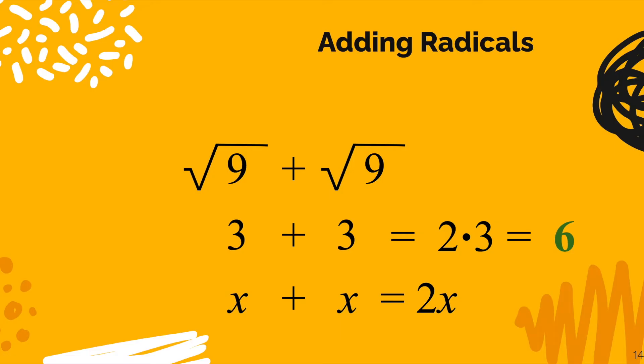Much like when we added 3 plus 3, we got 2 of those and that was 6. We can think about radical 9 plus radical 9 as being 2 times the square root of 9, which, of course, is 2 times 3, which is 6. So radical 9 plus radical 9 is the same thing as 2 radical 9.